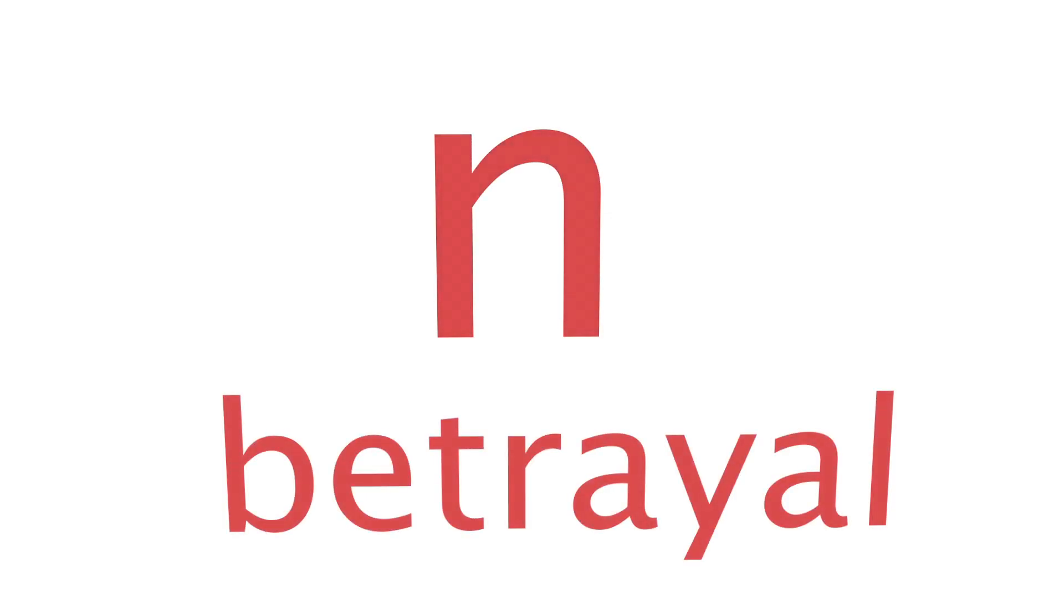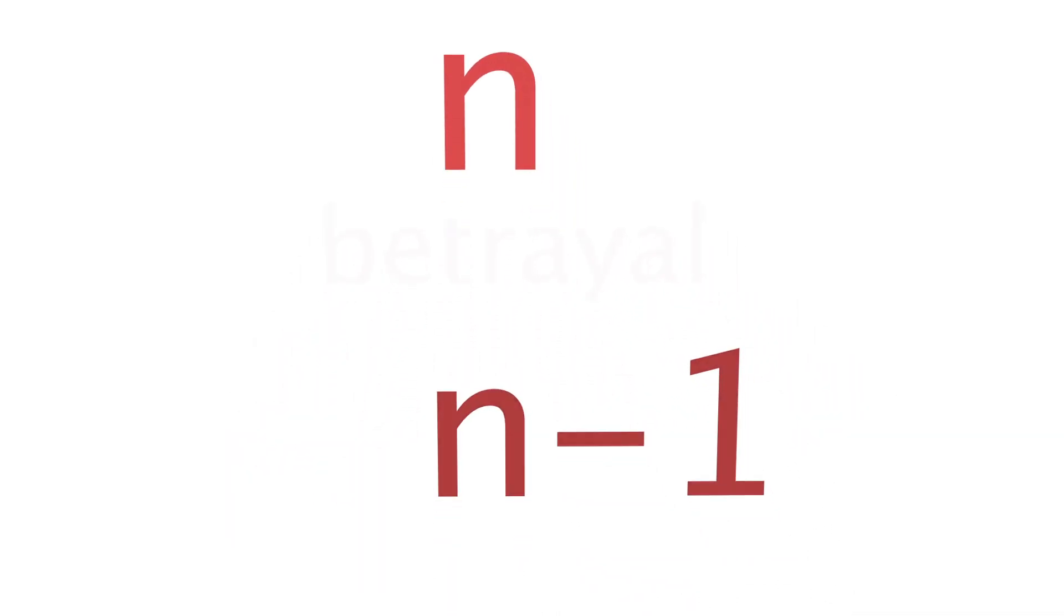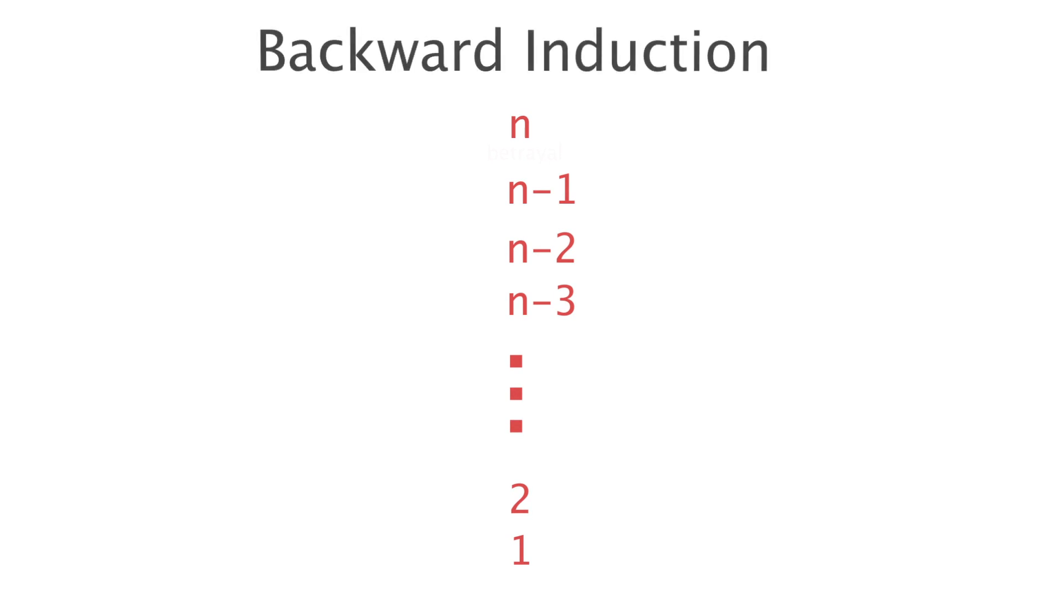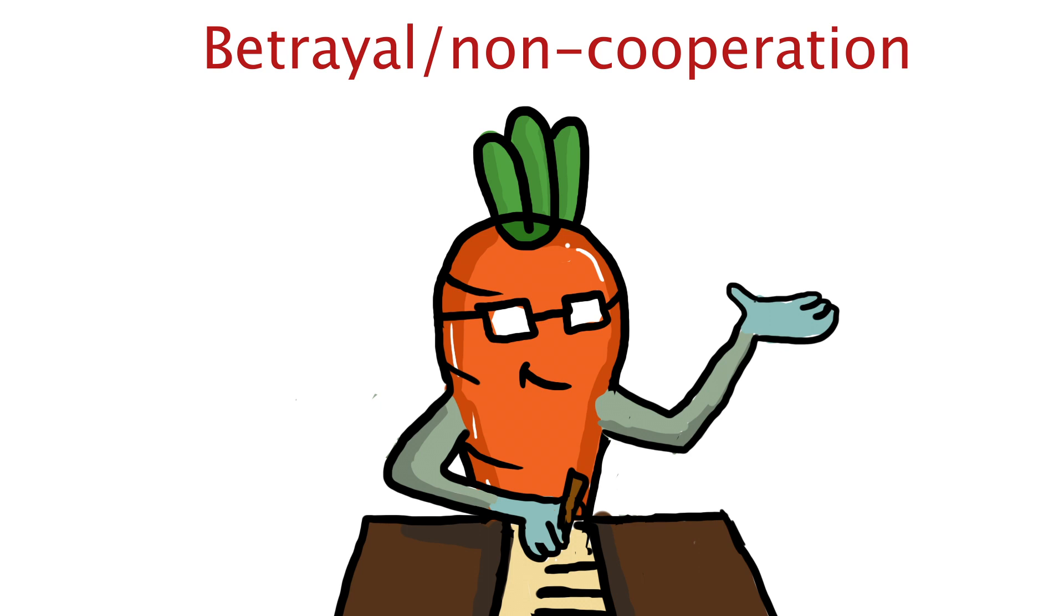Mathematically, if the players play n games, the same result will arise. In the final round, they will betray each other. And because they know this, they will also betray each other in the n-1th round, and the n-2nd round, and so on. This will go on for every single round. What we have just done is a proof by backward induction where you reason backward in time from the future to the present. Once again, we see how betrayal is the dominant strategy even when multiple games are played, which is a rather somber result.